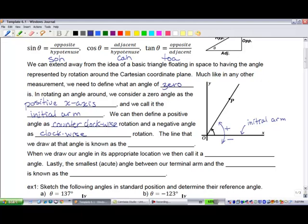The line that we draw at that angle is known as the terminal arm. It's angular measure, kind of hinged on zero, our origin, and it rotates around. When we draw our angle in its appropriate location, we then call it a standard position angle.